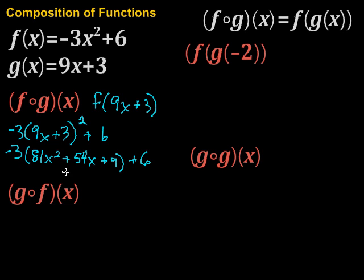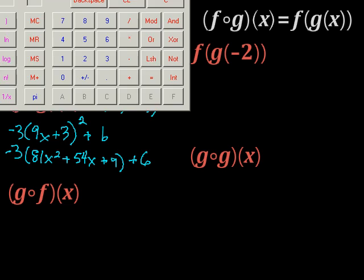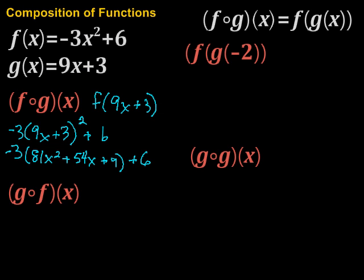So 81 times negative 3, that's going to be 81 times negative 3 would be 243, negative 243. X squared, then negative 3 times 54, well that would be negative 162 x, then negative 3 times plus 9 would be negative 27 and then plus 6.